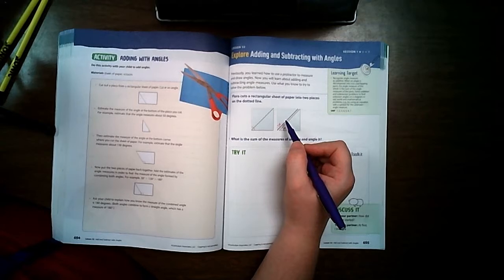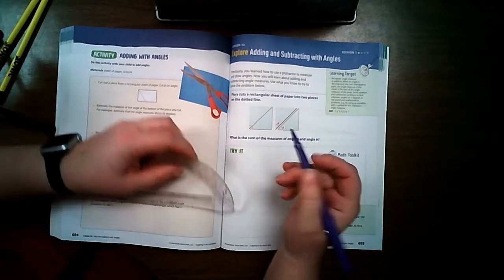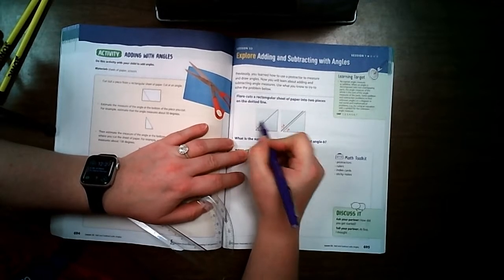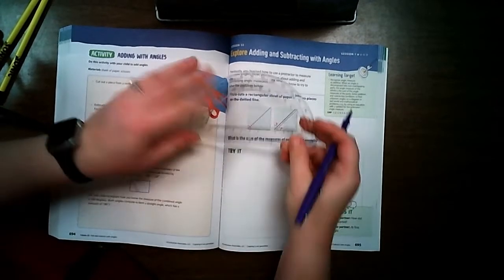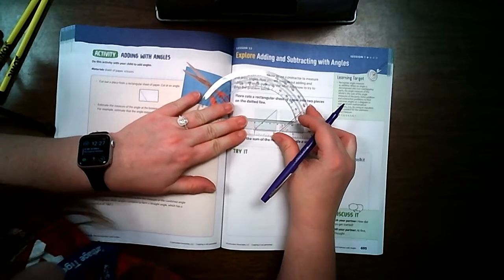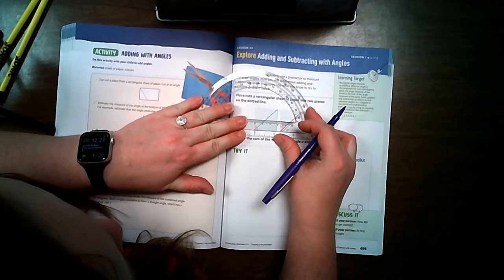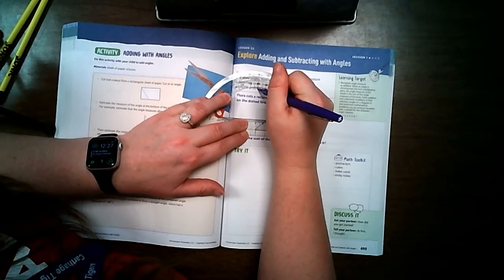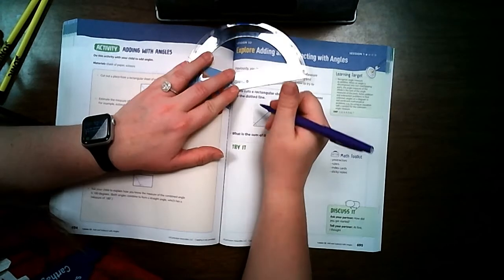Well, if you think about a piece of paper, I can measure these angles each by themselves or I can measure this one together. If I measure it together, I'm going to put this on my vertex right there on the line. And look, it goes all the way up here to 90 degrees.